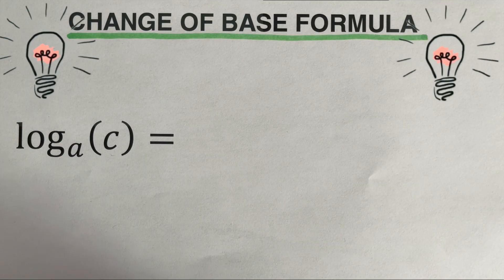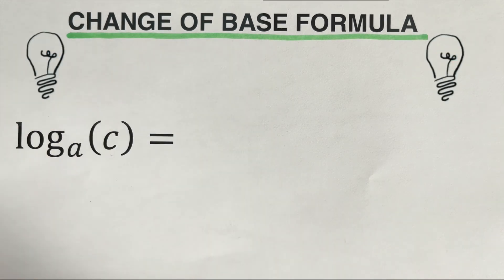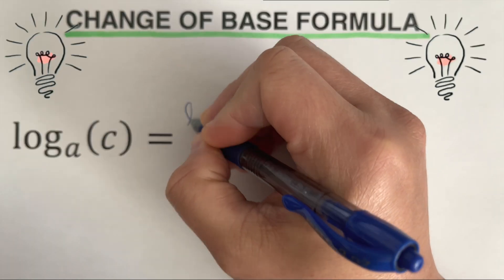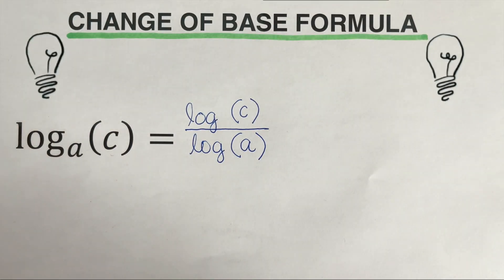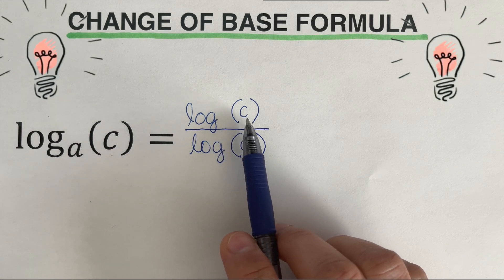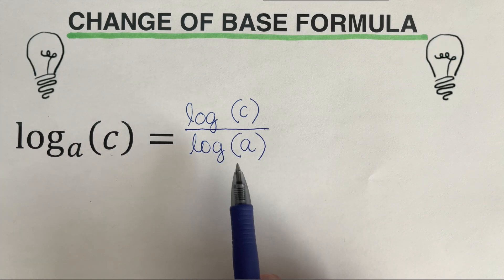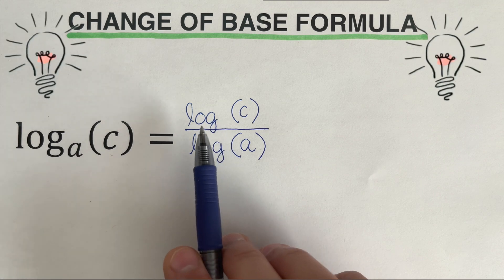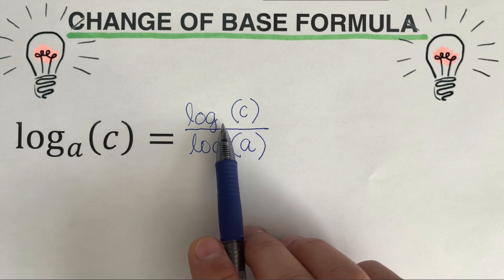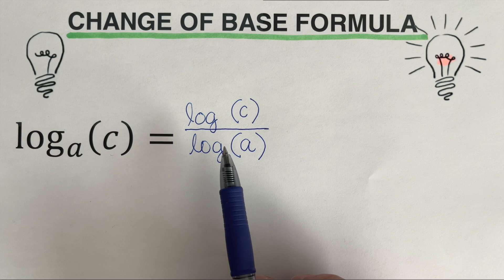If we are given log of c to the base a, using the change of base formula we can rewrite this as log of c over log of a. Please remember that in this expression the base that we have here, which is invisible, is 10. So this is actually log of c to the base 10 over log of a to the base 10.